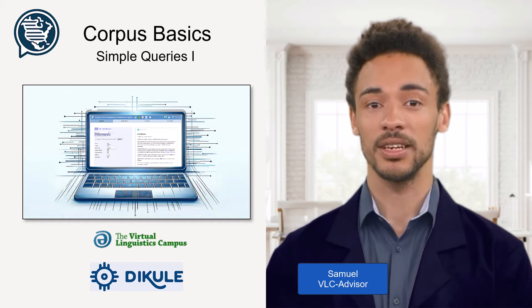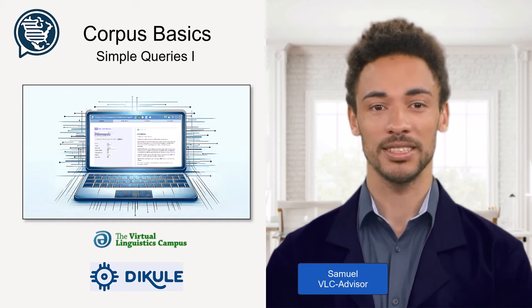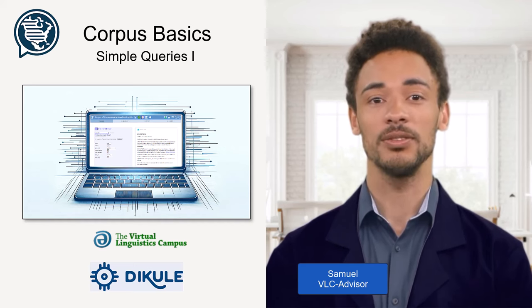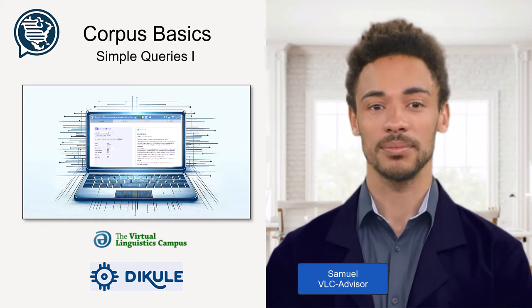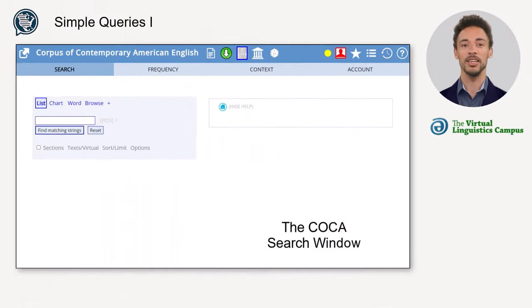Welcome back. In the following I want to show you the basics of the COCA list function and some specific search options. This function is set by default and it shows the frequency of a search term in the corpus.